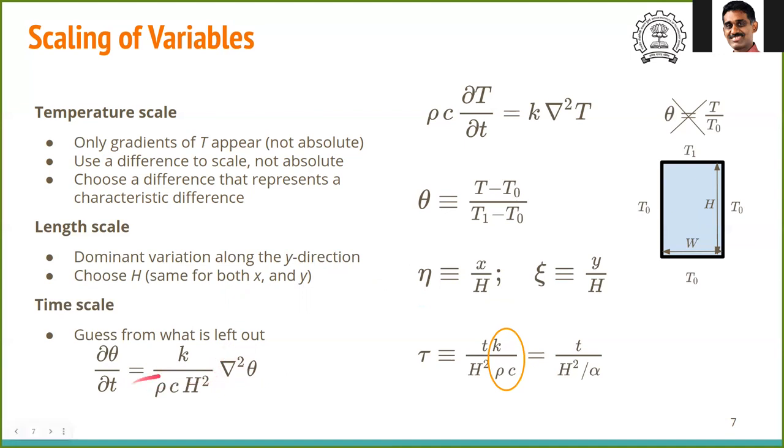Rearranging the constants to the right hand side, we get this equation. Here LHS has the dimension of inverse time. So the right hand side must also have the same. From this, we can identify the time scale to be ρCH²/k. In other words, we can define a new dimensionless variable τ which is defined by τ = tk/(H²ρC). Recognize that the term k/(ρC) is nothing but the thermal diffusivity α. Therefore, the time scale is H²/α or τ = t/(H²/α).